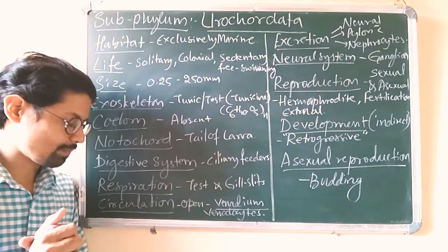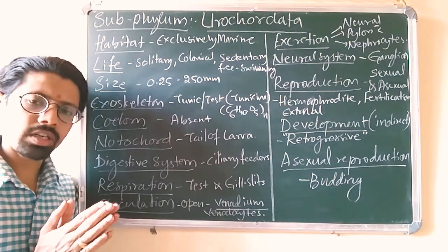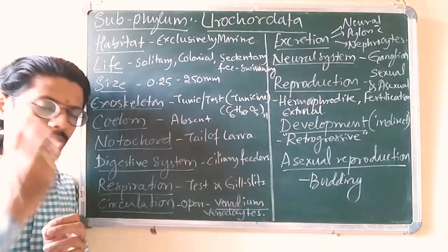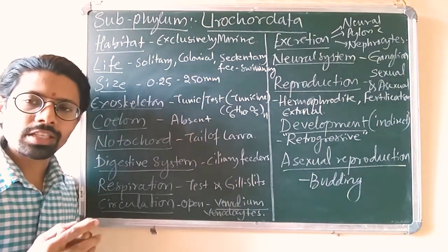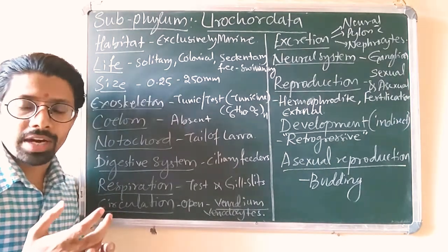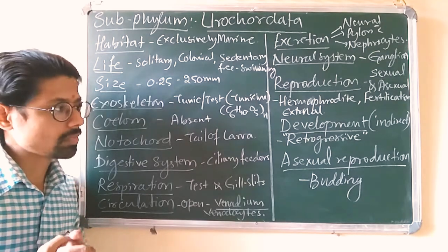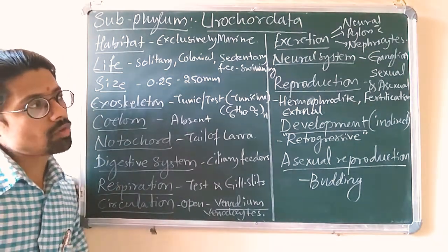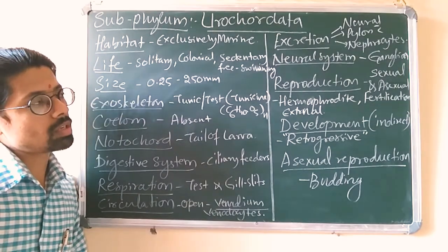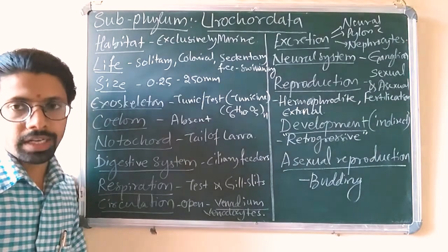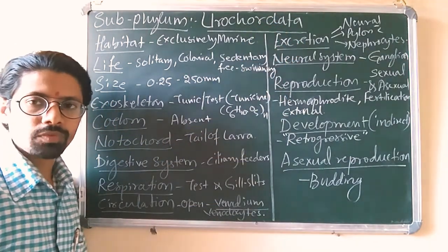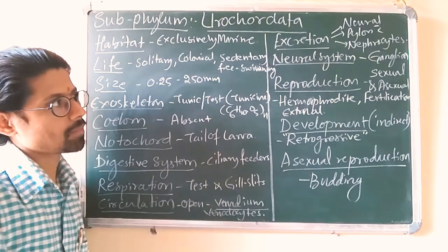Circulation is completely open type. They have special cells called vanadocytes, which extract vanadium from the sea or marine habitat — that is a special character of this group. Regarding excretion, it is carried out by neural glands, pyloric glands, or nephrocytes, which may be present for the process of excretion.